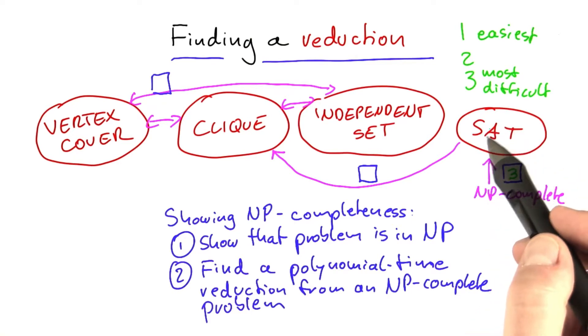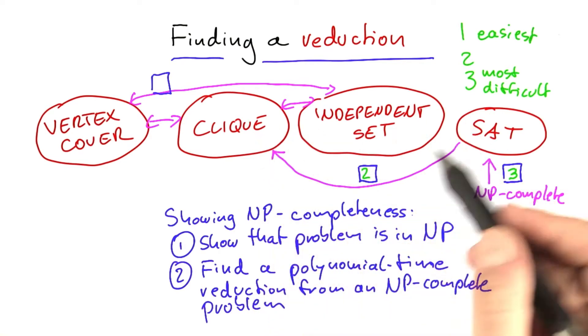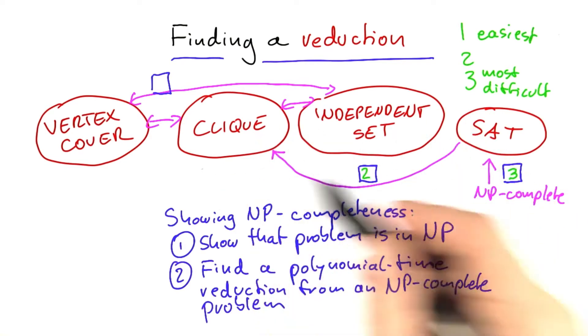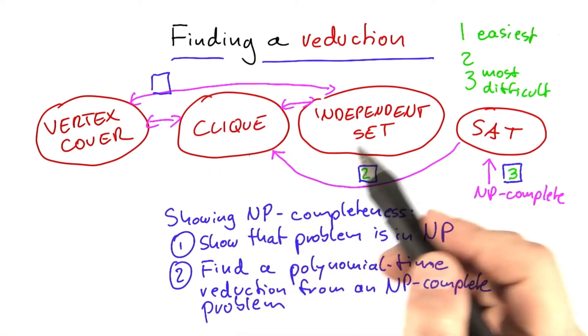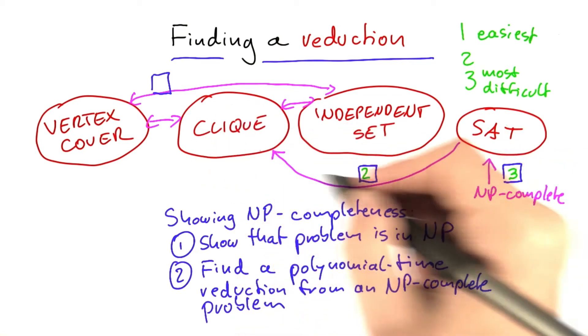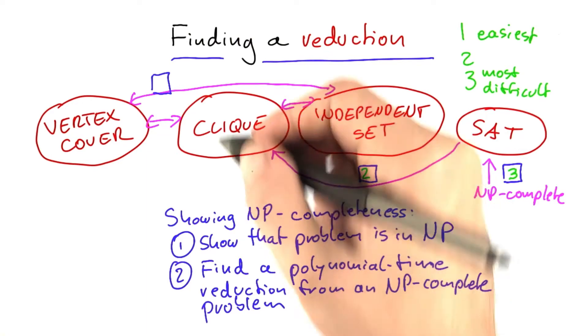Then I think that showing CLIQUE to be NP-complete was the next difficult thing. Because it's not really obvious how you can reduce SAT to CLIQUE, because SAT is a problem on boolean formulas, CLIQUE is a problem on graphs. And so we had to find a good idea to show how SAT can be reduced to CLIQUE.